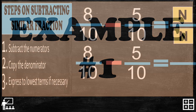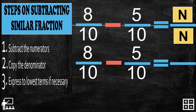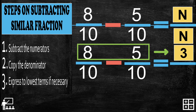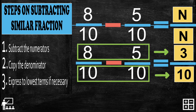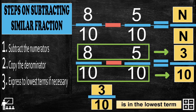Let's try an example. Subtract the numerators. The numerators are 8 and 5, so 8 minus 5 gives you 3. We just copy the denominator, which is 10. Last, express to lowest terms if necessary. But 3 over 10 is already in lowest terms, so we don't need to reduce the fraction.